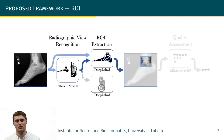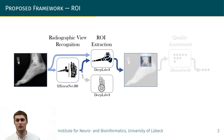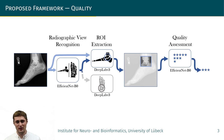While the entire radiograph is relevant for diagnosis, only a fraction is needed for assessing the quality of the standard projection. Therefore, in the next step, the relevant region of interest is extracted by segmenting a bounding box via one of two DeepLab V3 networks. Which DeepLab V3 is used depends on the result of the radiographic view recognition. Getting standardized regions of interest on a particular radiographic view is the basis for assessing diagnostic quality with high accuracy.